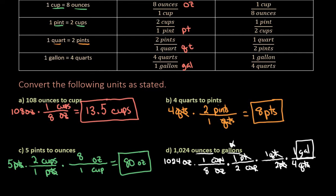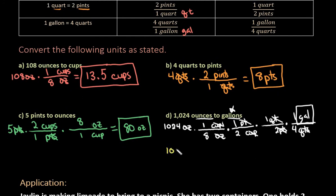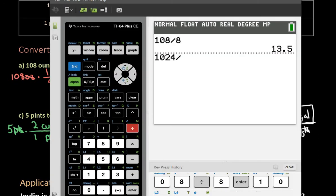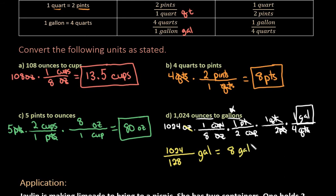For this one, there are a couple of different ways you could plug this into your calculator. I find it's easier to just multiply all the way across the top — we would end up with 1,024 on the top. And then on the bottom, I would have 8 times 2, which is 16; 16 times 2 would give me 32; and 32 times 4 would give me 128. So all I would have to do is take 1,024 divided by 128, and we can see that gives us 8 gallons. So 1,024 ounces is equivalent to 8 gallons.